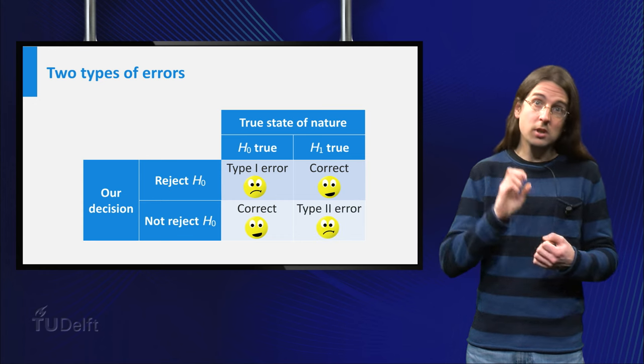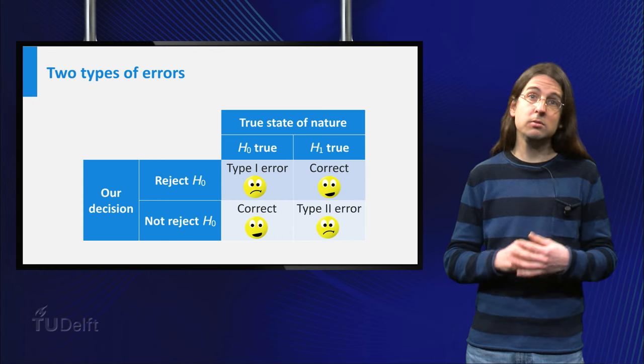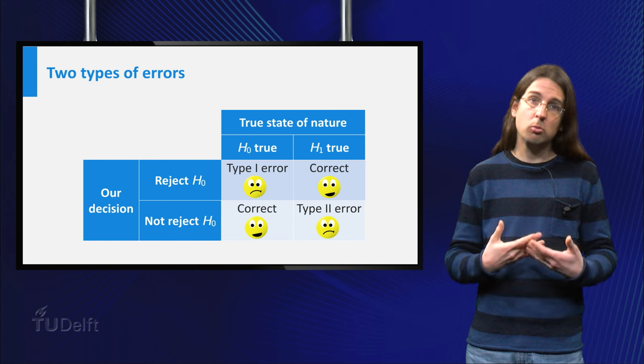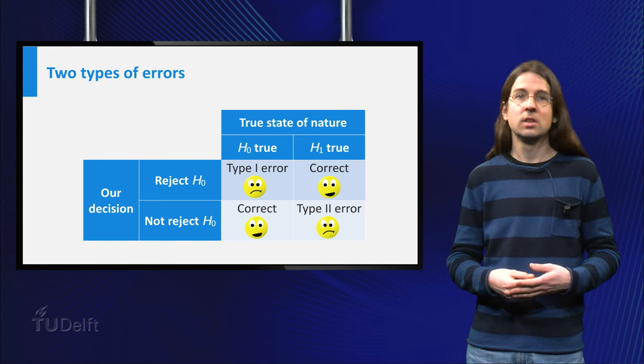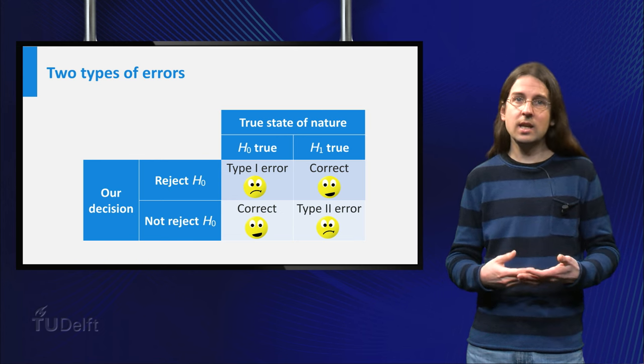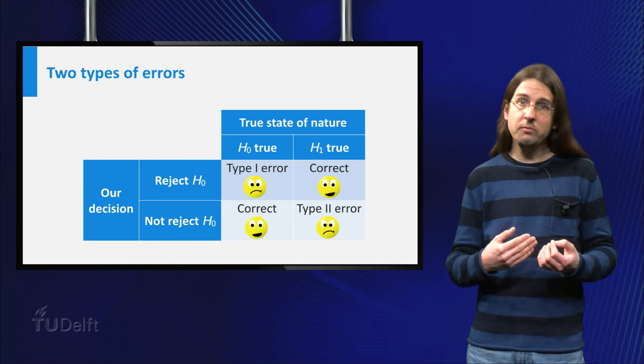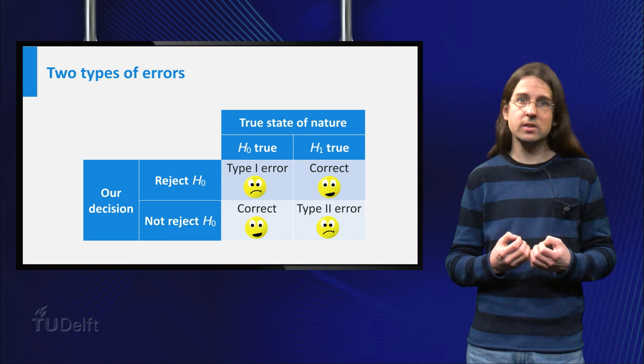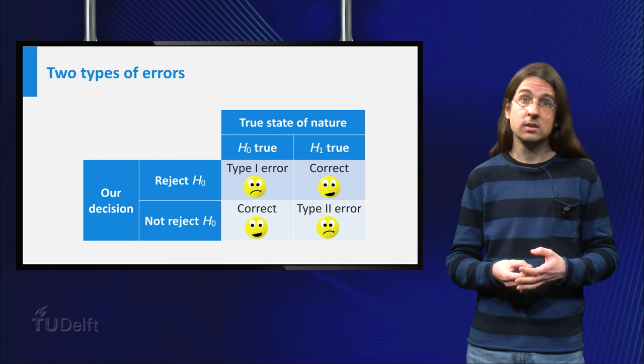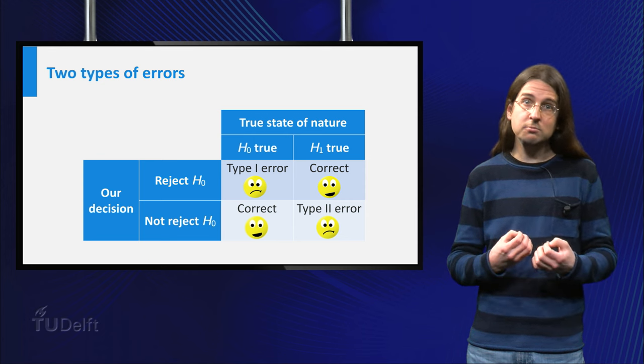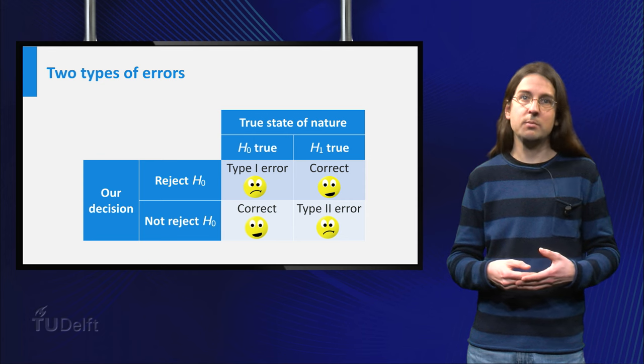A type 2 error happens if we do not reject H0 while H1 is true. This is the case if the climate in 2014 is warmer than before, but we think the data is not convincing enough to conclude that. That is, we do not reject the hypothesis that the climate is the same.